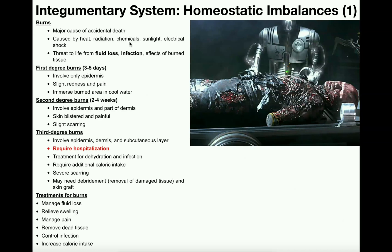Different types of burns involve different numbers of layers of the integumentary system. Third degree burns are a major cause of accidental death, and that death generally comes from fluid loss and infection. The fluid loss causes dehydration because, especially in a third degree burn, the underlying tissue — the dermis and hypodermis — is exposed to the external environment. Normally the epidermis protects those tissues from fluid loss, and losing that protection can cause dehydration and electrolyte imbalances. Damaged tissue also leads to bacterial infection, and both of these factors are mainly what cause death from severe burns.